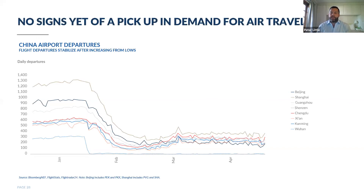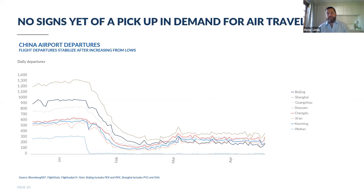Zooming in on air transportation specifically — that's dropped off by about 70%. Looking at China's major airports, the one key takeaway is that the trajectory is not great: we're not seeing any signs of improvement in air travel even two months out from the release of movement restrictions. That doesn't bode particularly well for travel and leisure spending in terms of the pace of recovery for that sector.